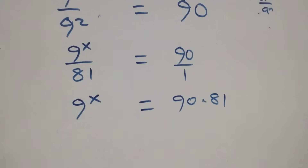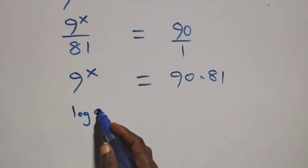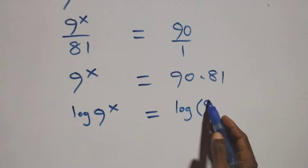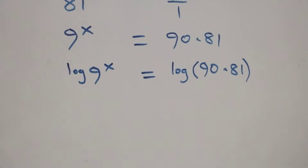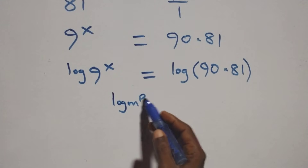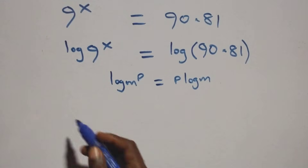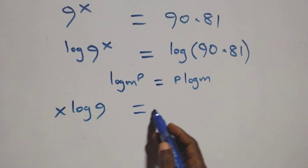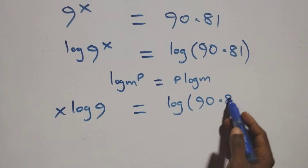The next step here we take the log on both sides. We have log of nine raised to power x equals log of ninety times eighty-one. Then we apply the power rule of logarithms: log n raised to power p is the same thing as p log n. So here we have x log nine equals log of ninety times eighty-one.